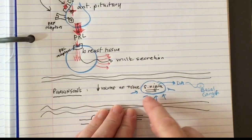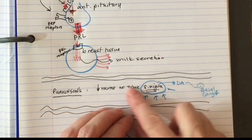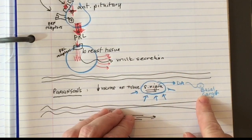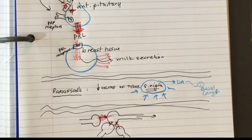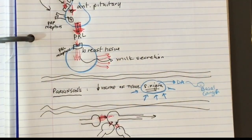Keep that in mind. Hopefully that helps explain the mechanism of galactorrhea and why we see it with dopamine antagonist drugs but not in patients with Parkinson's.